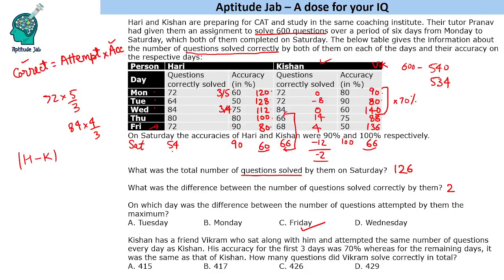For the first three days, Vikram attempted 310 questions with 70% accuracy, giving 217 correct. Adding the last three days' correct attempts of approximately 200, the total is 417. You can verify using the last digit: 31 × 7 ends in 7, plus last digit 0 gives 7 — only one option ends in 7. This is a fairly doable set. If you enjoyed solving this, please like the video.